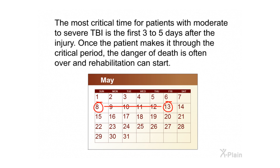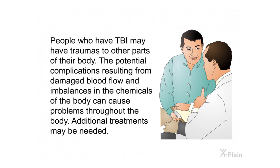The most critical time for patients with moderate to severe TBI is the first 3 to 5 days after the injury. Once the patient makes it through the critical period, the danger of death is often over and rehabilitation can start. People who have TBI may also have traumas to other parts of their body, and complications from damaged blood flow or chemical imbalances can cause problems throughout the body, so additional treatments may be needed.